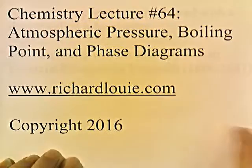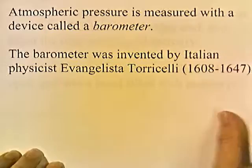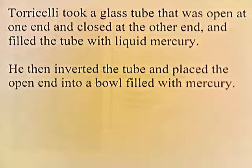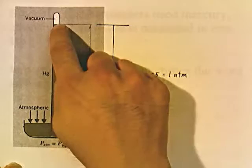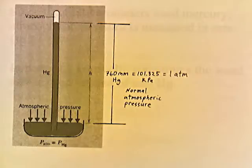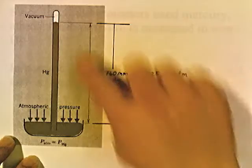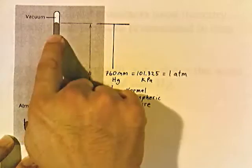Atmospheric pressure is measured with a device called a barometer. The barometer was invented by Italian physicist Evangelista Torricelli, who lived from 1608 to 1647. Torricelli took a glass tube that was open at one end and closed at the other end, filled it with liquid mercury, then inverted the tube and placed the open end into a bowl filled with mercury. He noticed that the mercury in the tube did not completely spill into the bowl, and the height would sometimes fluctuate from day to day. Torricelli believed that atmospheric pressure exerted on the surface of mercury in the bowl kept the mercury in the tube from spilling out, and the height of the mercury would go up and down as the atmospheric pressure went up and down. That's how a barometer works.